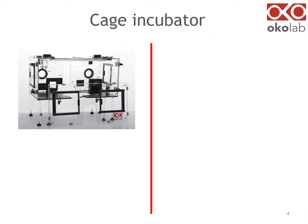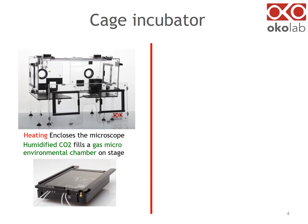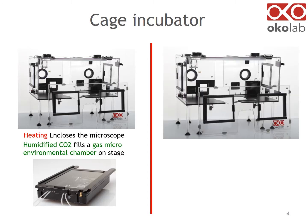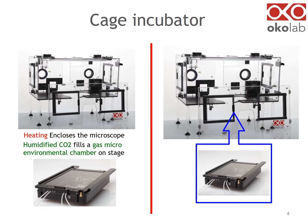In a cage incubation system, heating encloses the microscope. The stage, objective, and nose piece are located inside the enclosure at 37 degrees. The system is complete with a microenvironmental chamber preventing humidified CO2 from dissipating. You will place your sample inside this chamber and locate it on the stage, in the enclosure, at 37 degrees. The enclosure provides an extremely stable environment, protecting your sample from drafts due to air conditioning cycles or foot traffic in the microscope room.